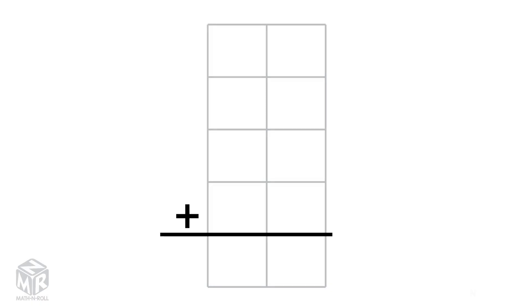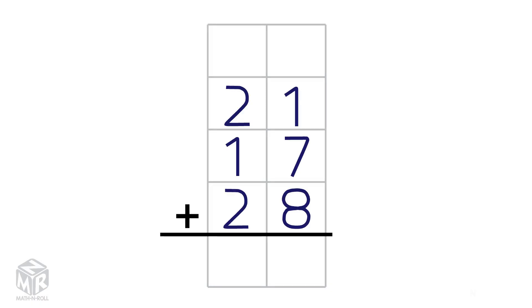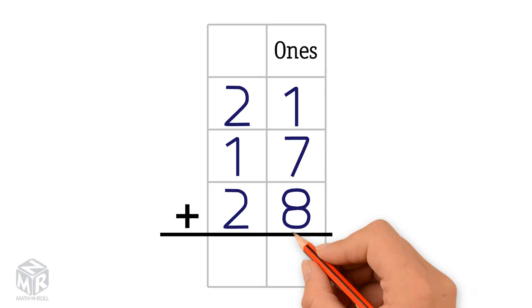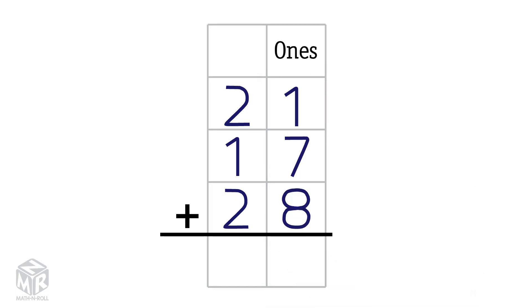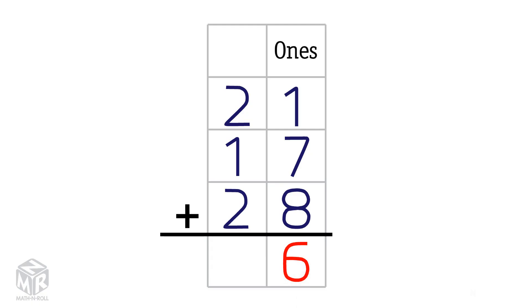Let's try another example: 21 plus 17 plus 28. We can't make a 10, so we add the ones from top to bottom. 1 plus 7 plus 8 equals 16. So we put the 6 in the ones column and the 1 in the tens column.